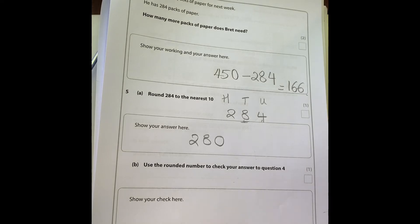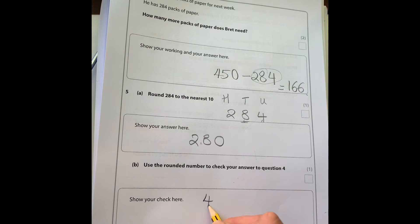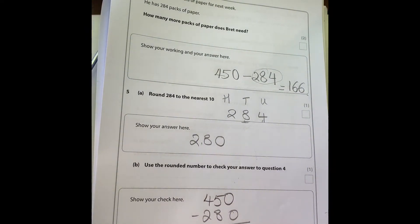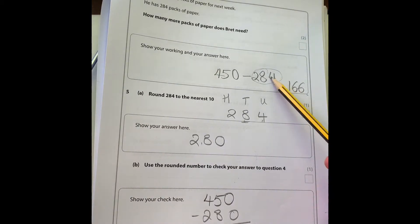This question often confuses people, but it's saying use your rounded number to check your answer to question four. So what it's asking you to do is instead of using 284, use your rounded answer instead. We could say 450 take away 280. Zero take zero, five take away eight we can't do, so I'll take one from here.